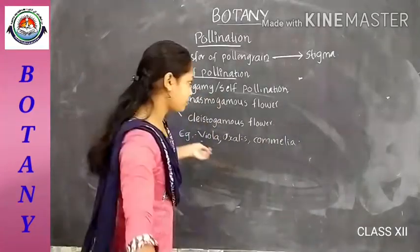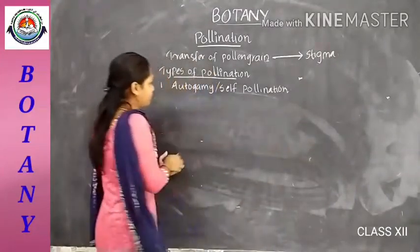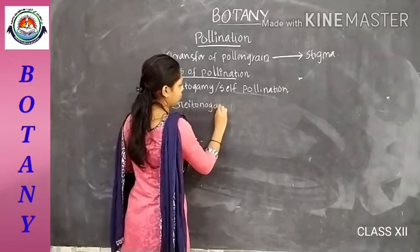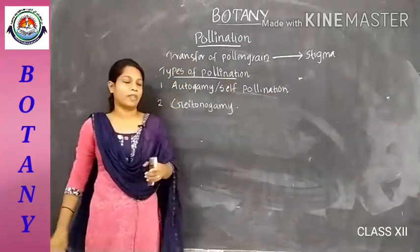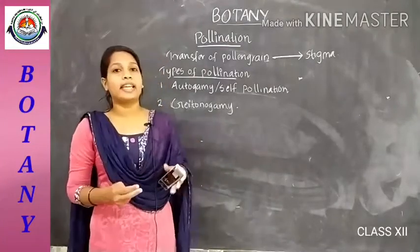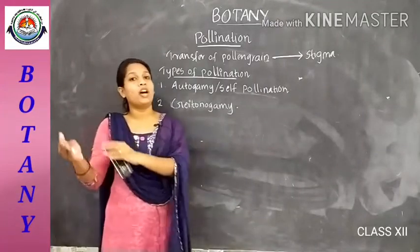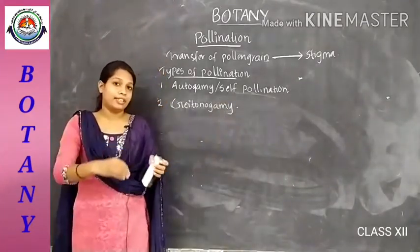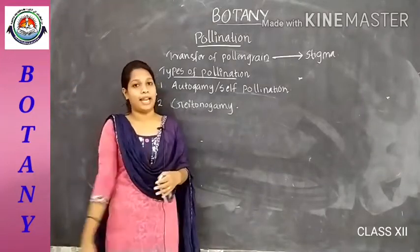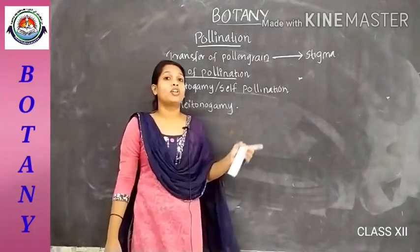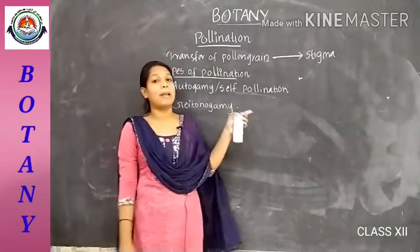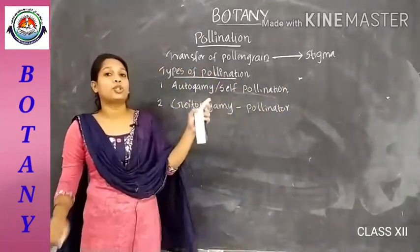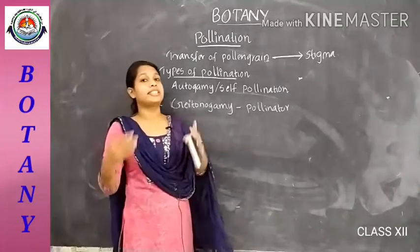The second type of pollination is geitonogamy. This is the process of transfer of pollen grain from the anther to the stigma of another flower of the same plant. It is the process of transfer of pollen grain from the anther to the stigma of a different flower of the same plant. There is occurrence of cross-pollination with the help of a pollinator. The flowers need a pollinator to carry out cross-pollination among flowers of the same plant.